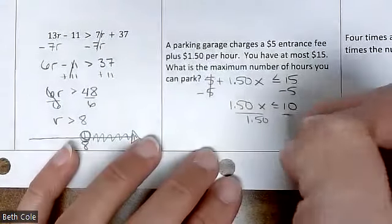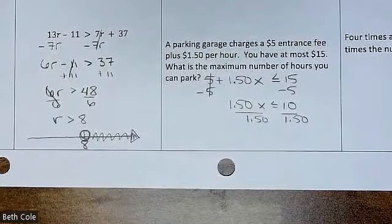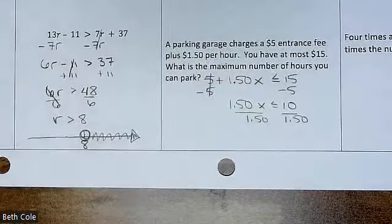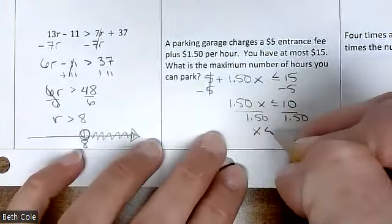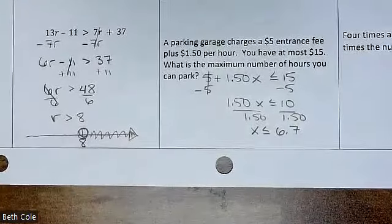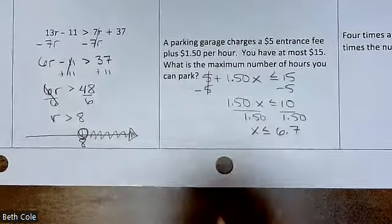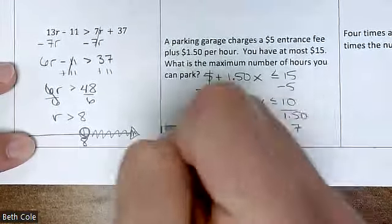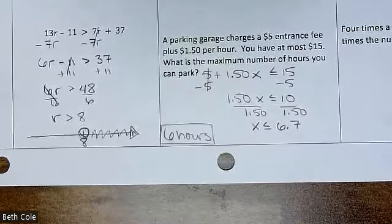So 1.50x is less than or equal to 10. And then divide by 1.50 — I'll type that in the calculator. That came out to 6.7, or 6 and two-thirds. But if you don't have enough money for the seventh hour, how many hours can you stay? You can only stay 6 hours. You still have to round down even though mathematically it would round up — you don't have enough money for the next hour.